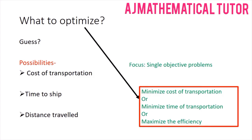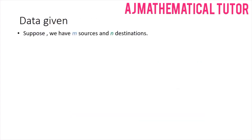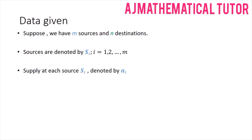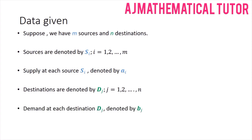Now let's look at the data given in these problems. Suppose we have m sources and n destinations. The sources are denoted by Si, where i goes from 1 to m, and each source has a certain amount of available material called the supply, denoted by ai. The destinations are denoted by Dj, where j goes from 1 to n, and each destination has an associated demand bj — the number of units required at that destination.